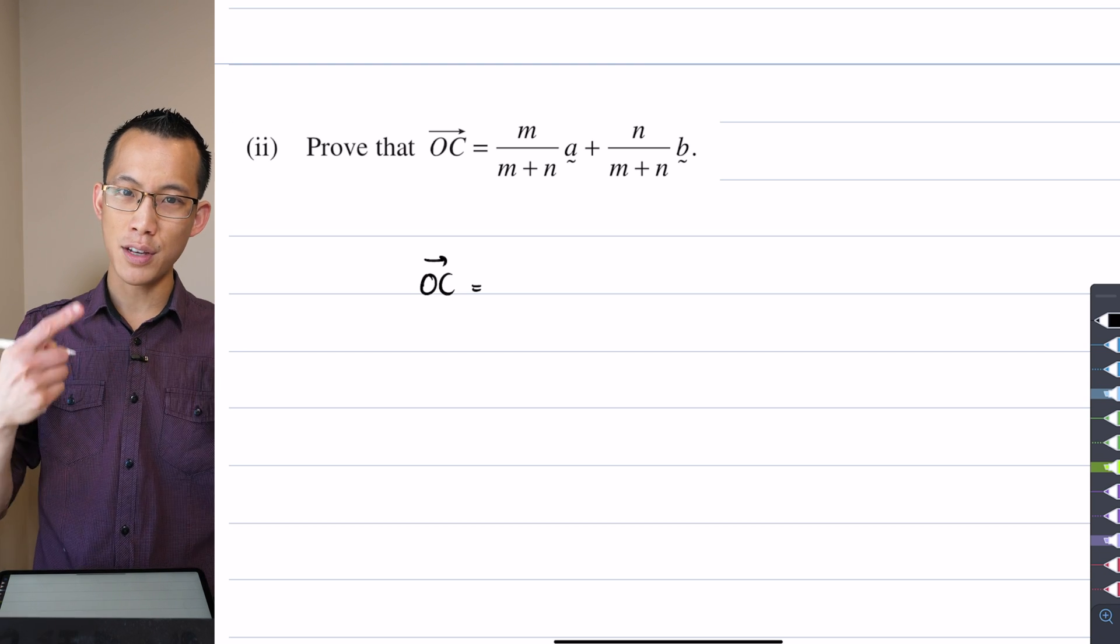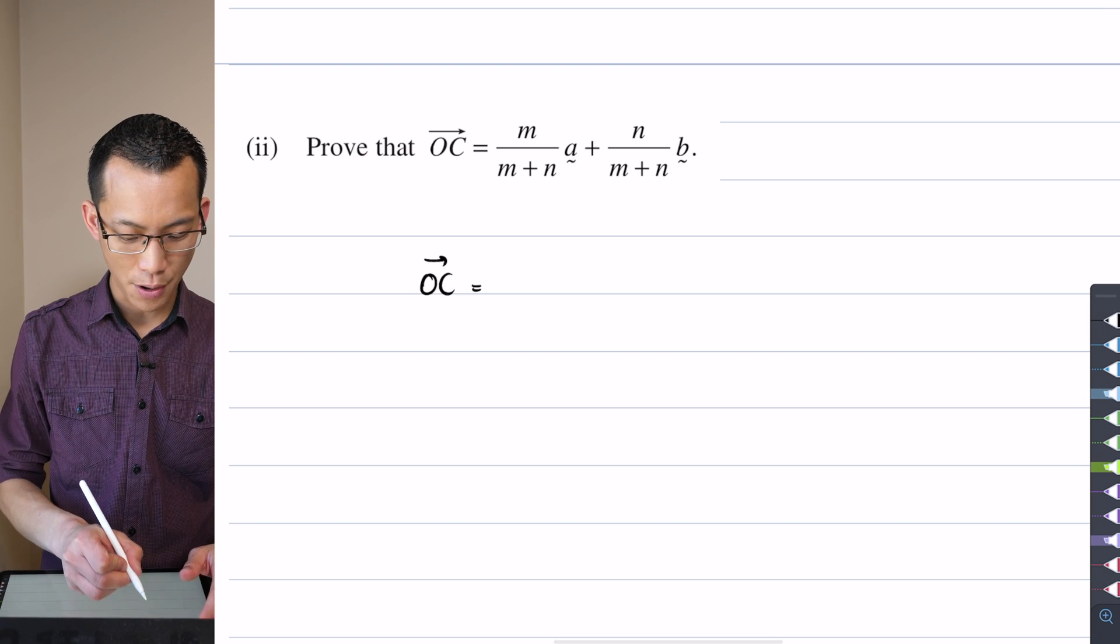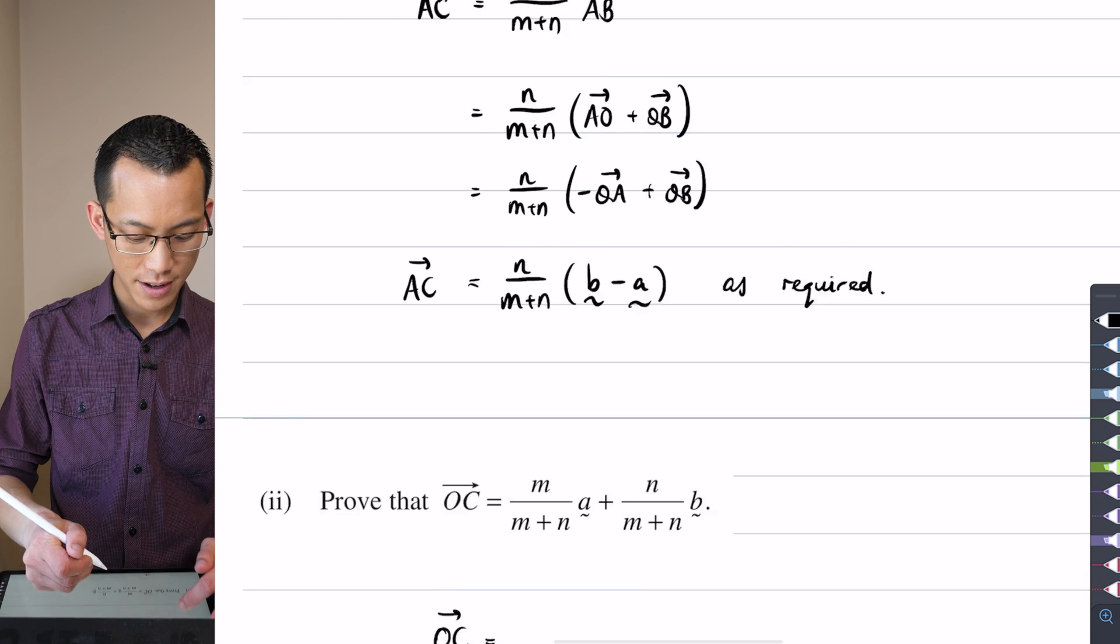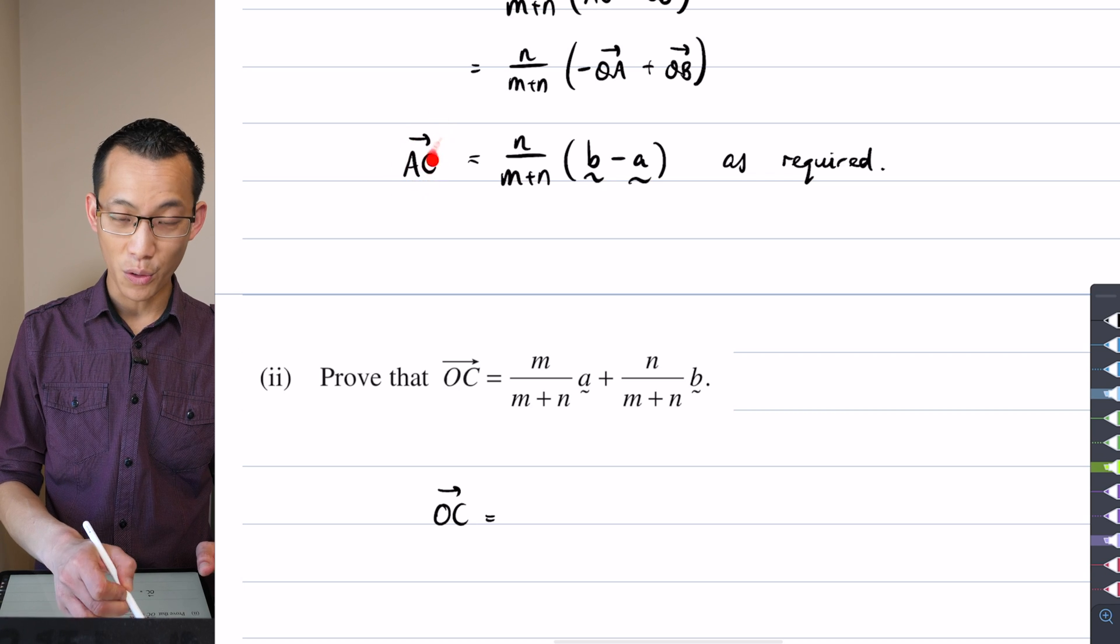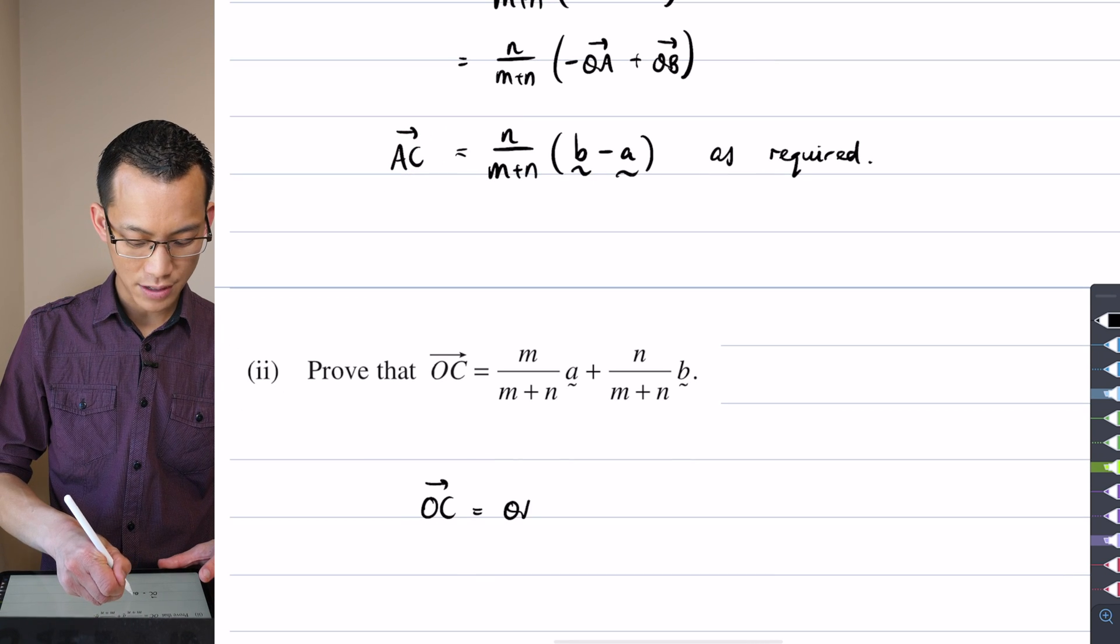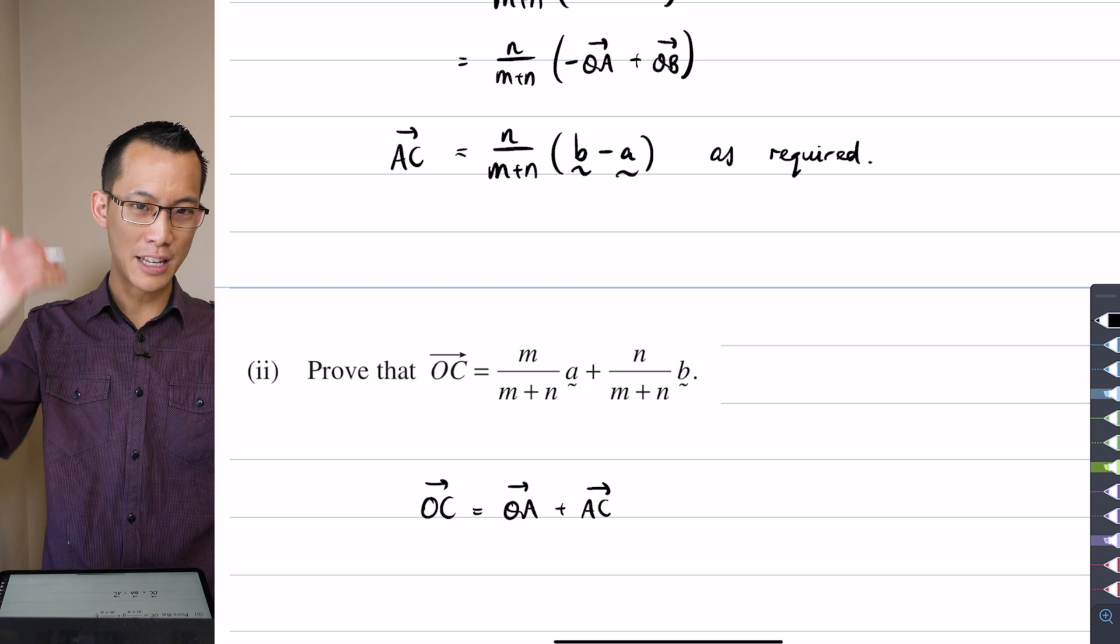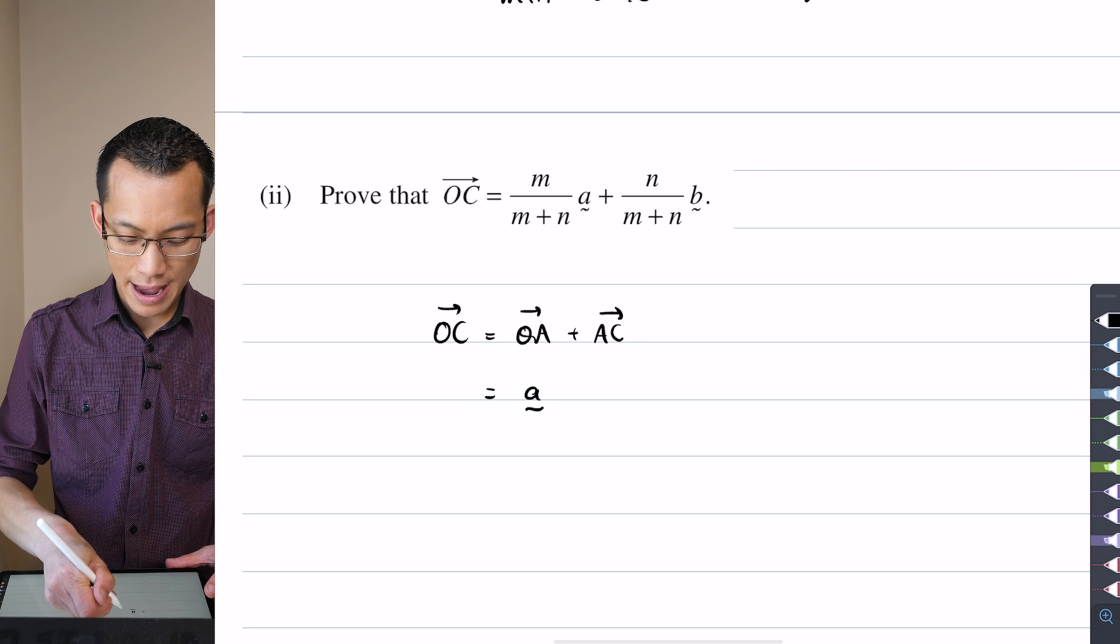So here's the proof. I'm thinking about OC. How do I get from O to C using the results that I've already gotten so far? Well, you can see there's this C component. I just proved that this is AC, right? So clearly the relationship to get OC and use this along the way, the most obvious way to do that is go from O to A and then go from A to C, which allows me to use the part one result. So that's going to be little a, that's going to be this, which I just got from the result above.